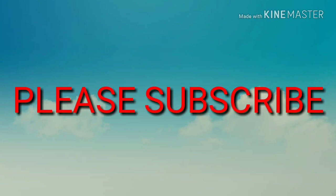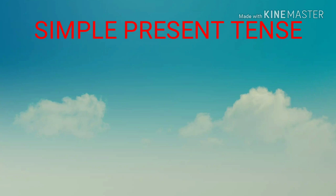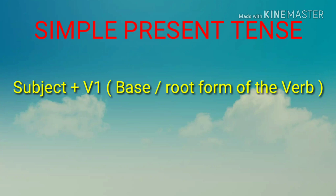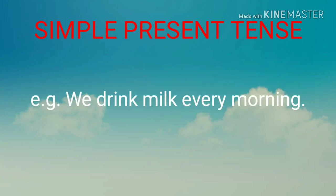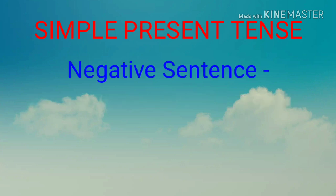Let's begin. Simple present tense: we make the simple present tense using subject plus first form of the verb — subject के साथ first form यानि base form या root form का उपयोग करके simple present tense बनाया जाता है। For example: 'We drink milk every morning' — हम हर सुबह दूध पीते हैं। इस sentence में 'we' यह subject है और उसके साथ 'drink' यह verb की first form है।